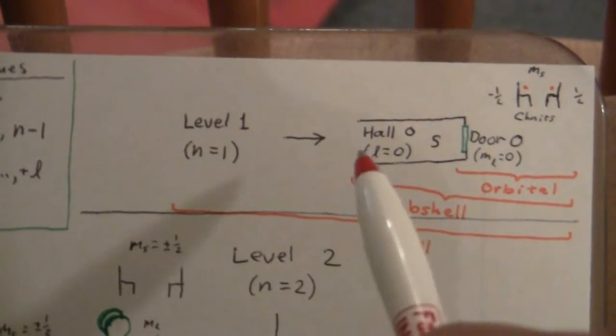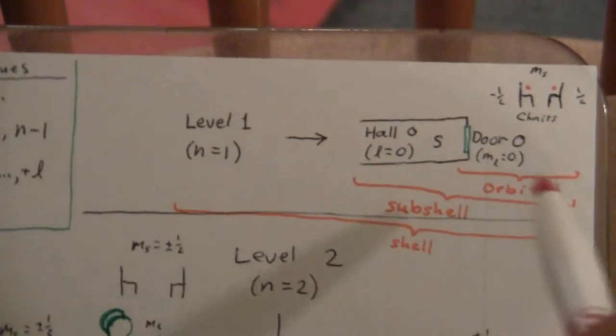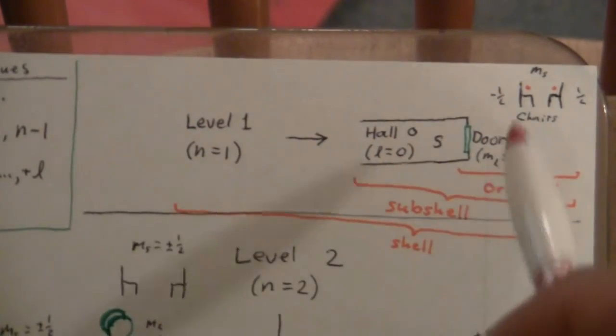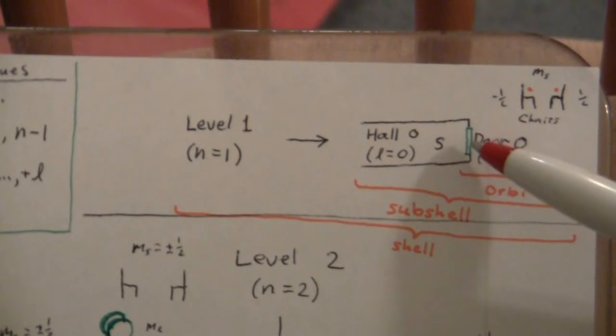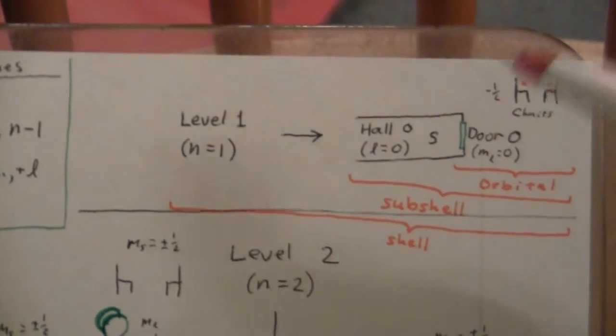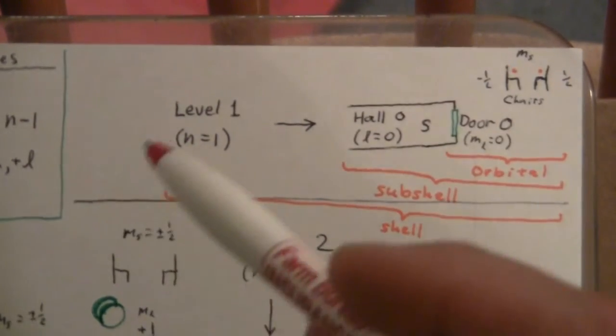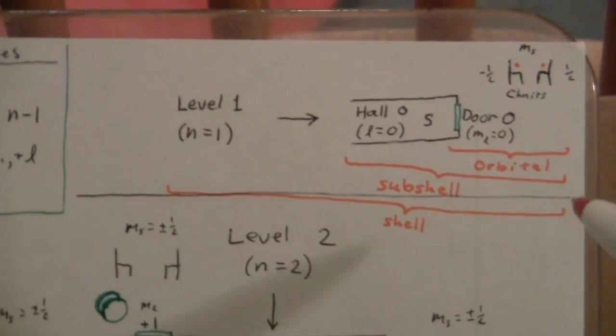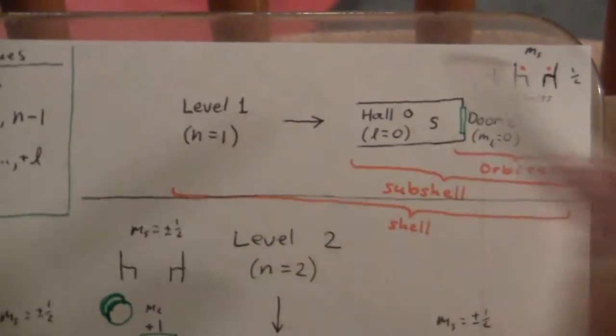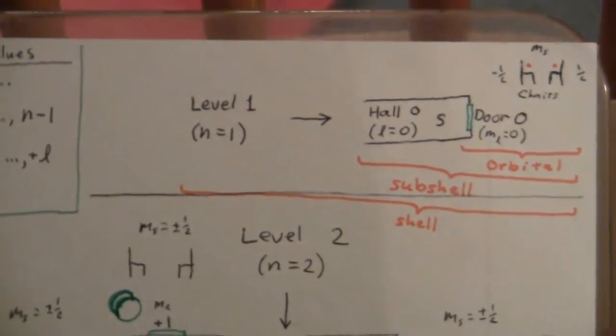The orbital is represented by the room, if you will, where the actual electrons are. The electrons are in the orbital. And then the subshell is the whole hallway and all the doors in it. In this case, there's only one door or one room. And then the shell is the entire level and all of everything within that level.